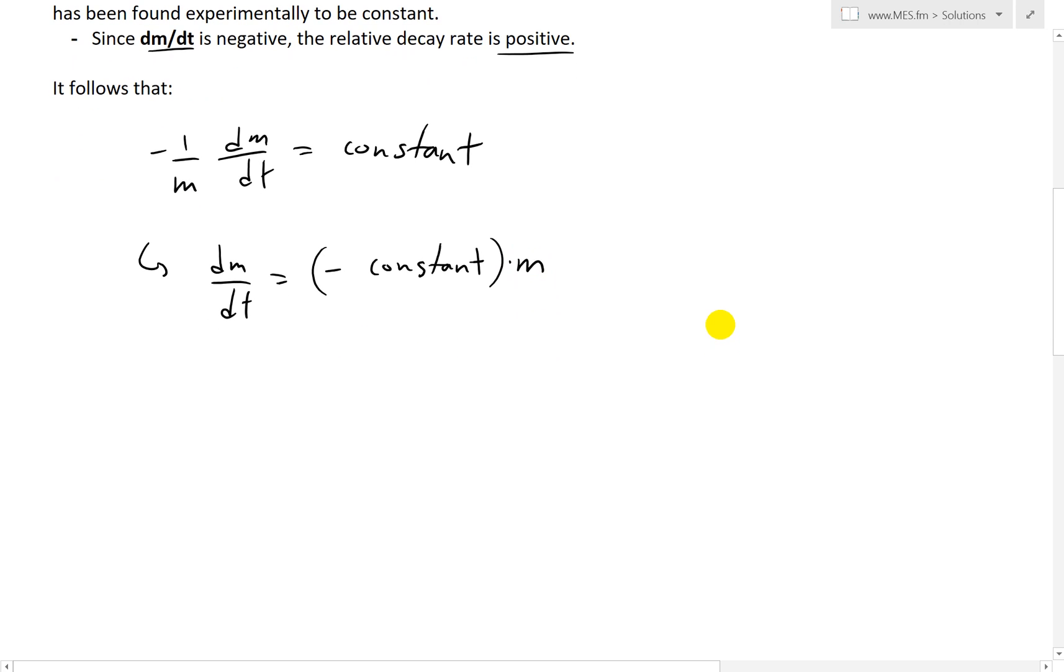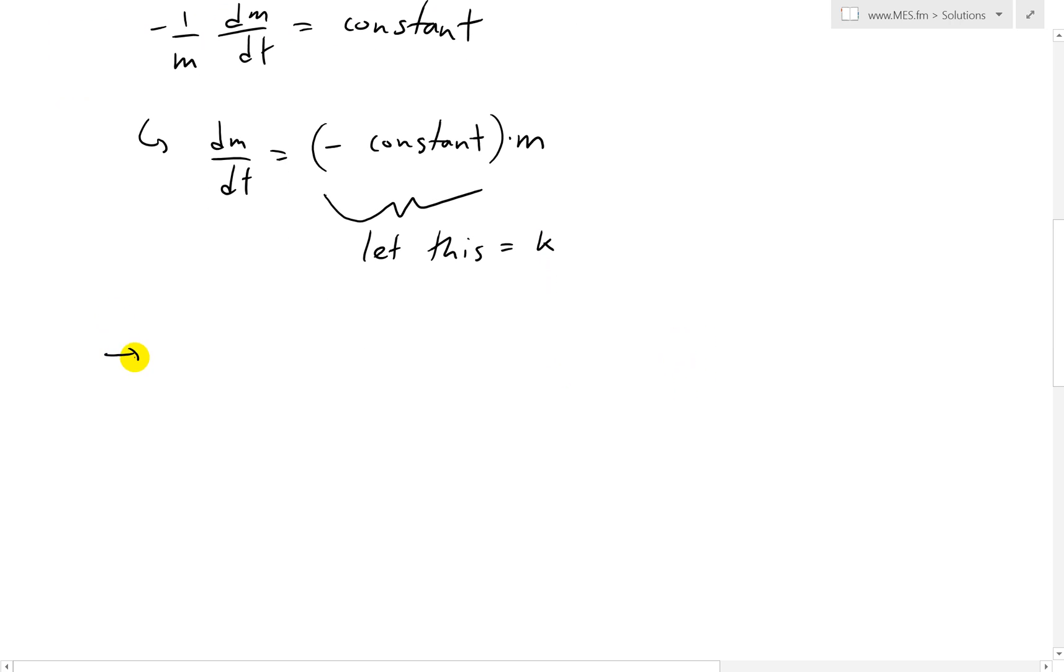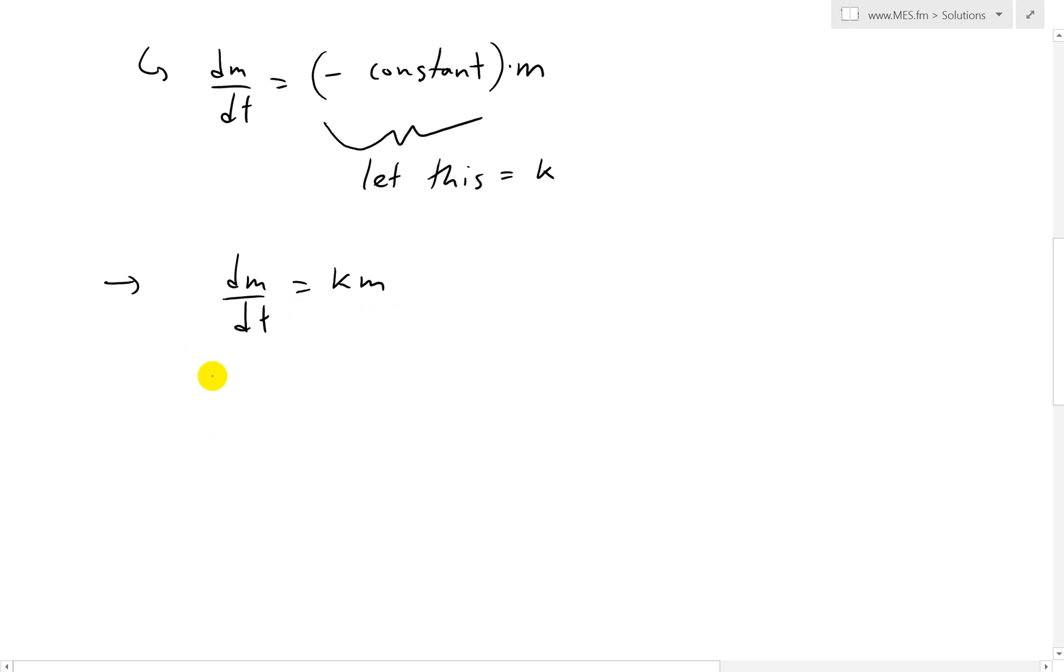So we have a negative constant times m. What we're going to do is let this equal K. So we're going to let that negative constant equal K. What we end up getting is dm/dt equals Km. So I'll highlight this. This is our differential equation now.